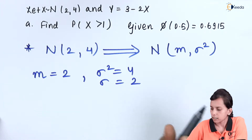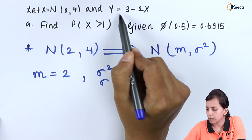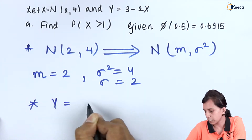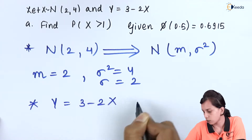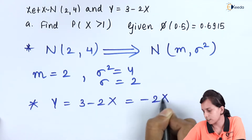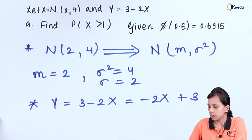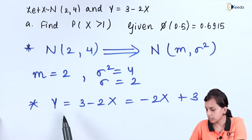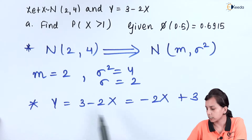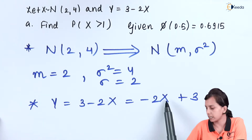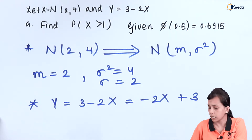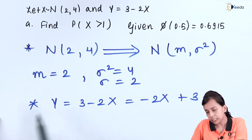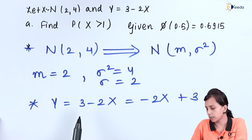Second, capital Y is given as 3 minus 2X, which we can rearrange as minus 2X plus 3. As we discussed in previous videos, when capital Y is a linear function of capital X random variable, capital Y will also be a Gaussian random variable.